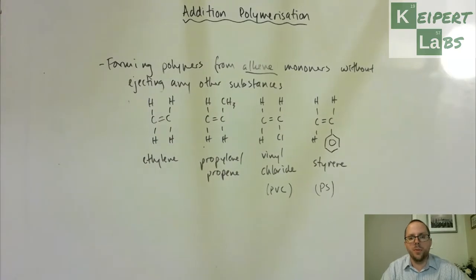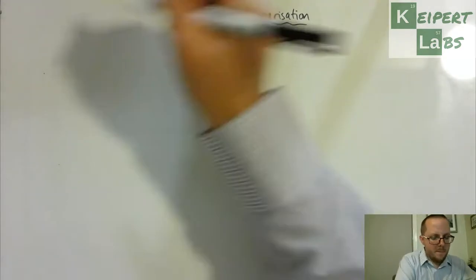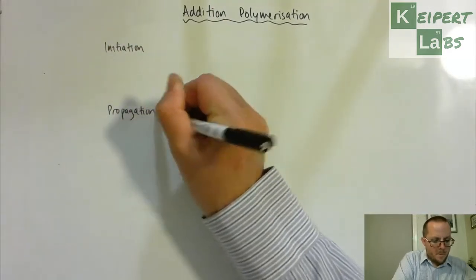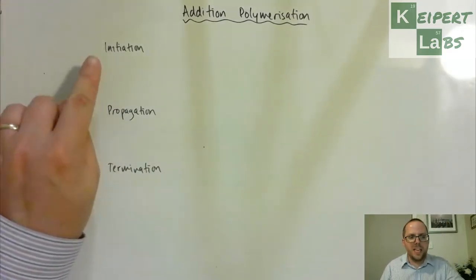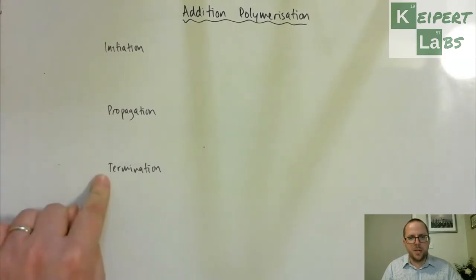So now I'm just going to quickly go through the stages of forming a polymer from an alkene monomer. The three main stages that we're talking about here we talk about initiation, propagation, and termination.